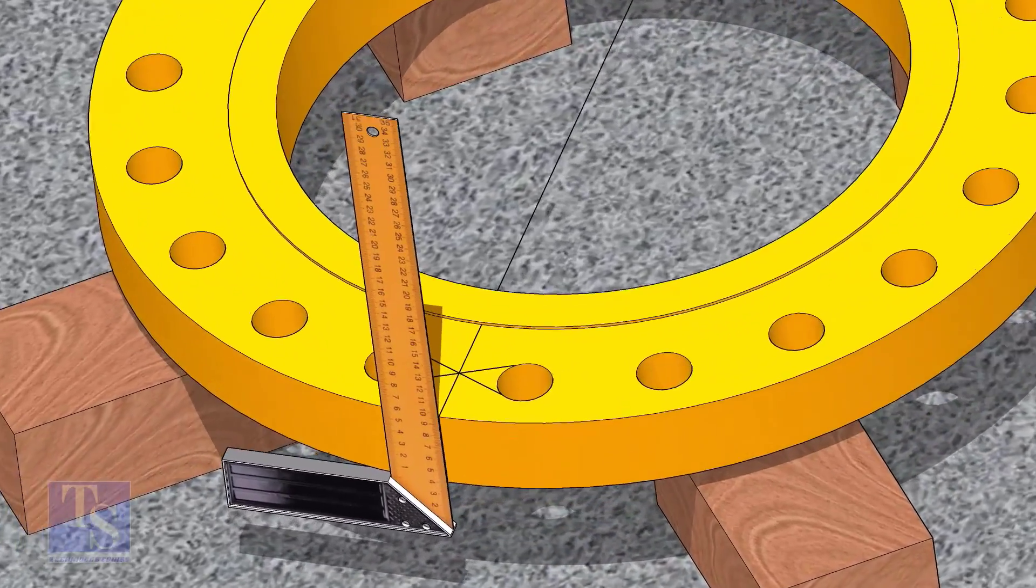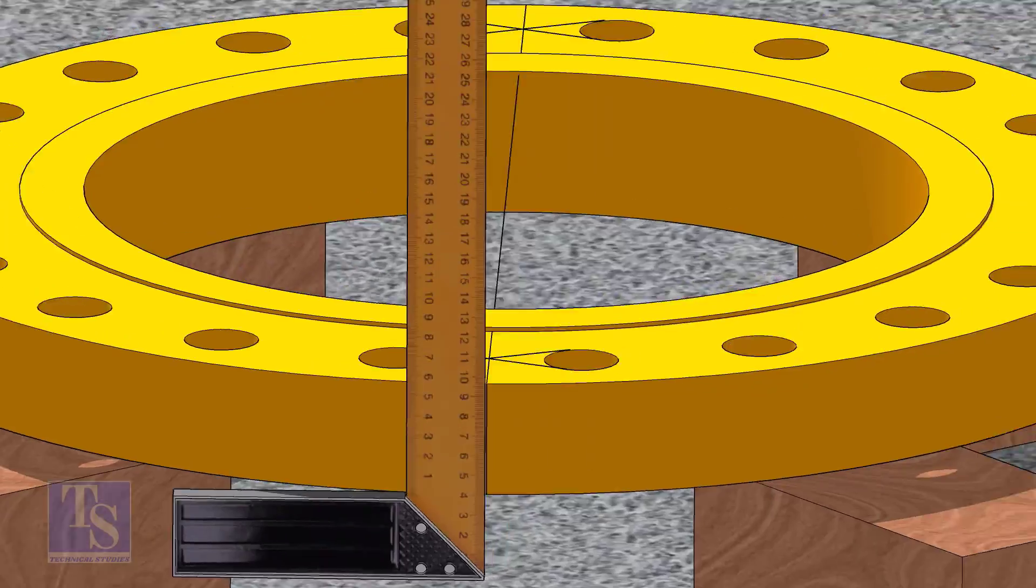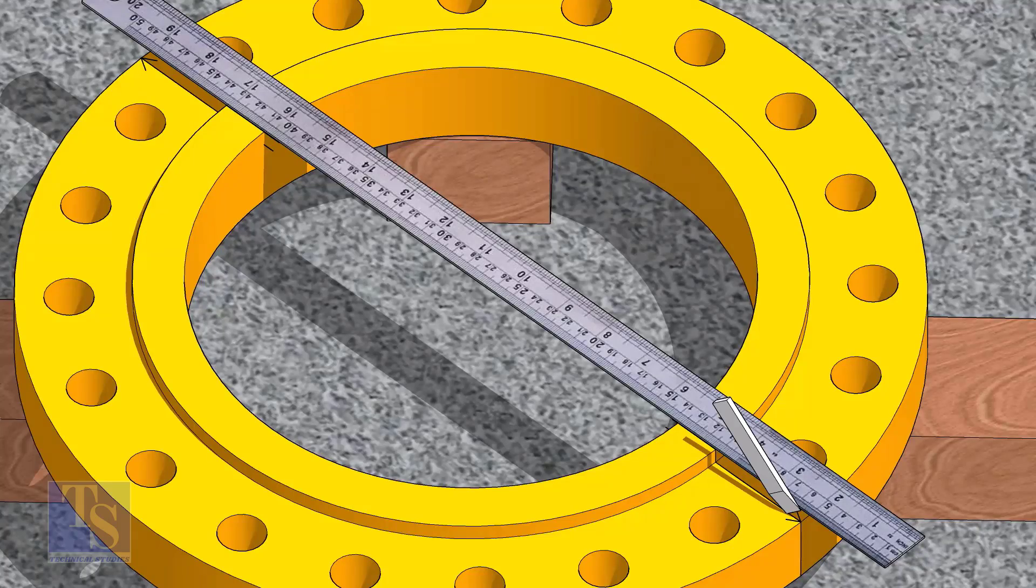Now, transfer the center line to the sides of the flange. Overturn the flange and transfer the center line on the back side of the flange.